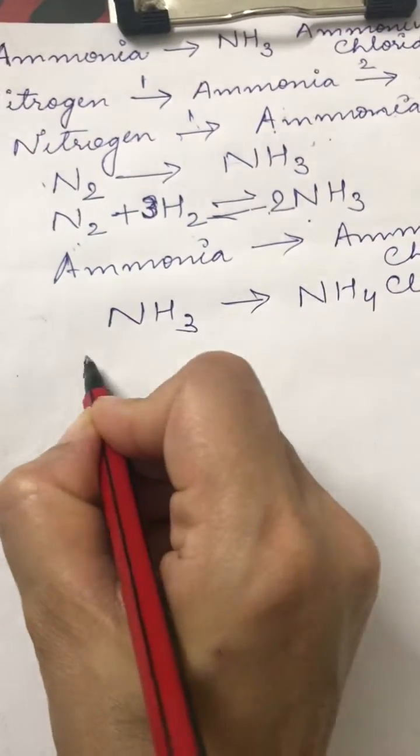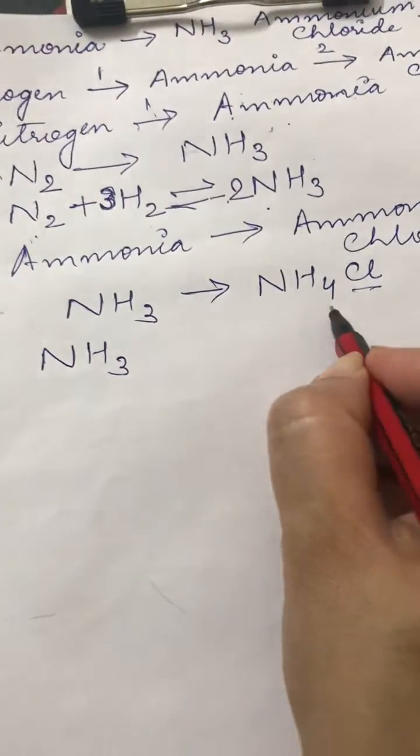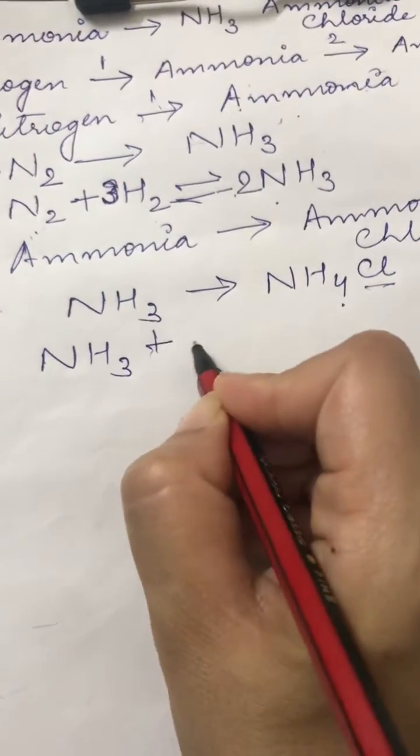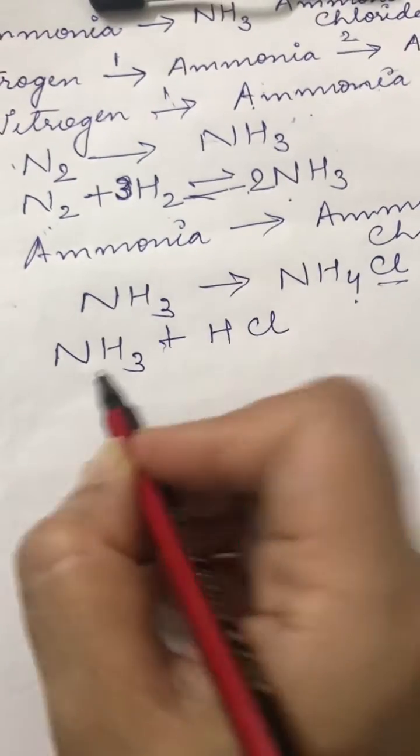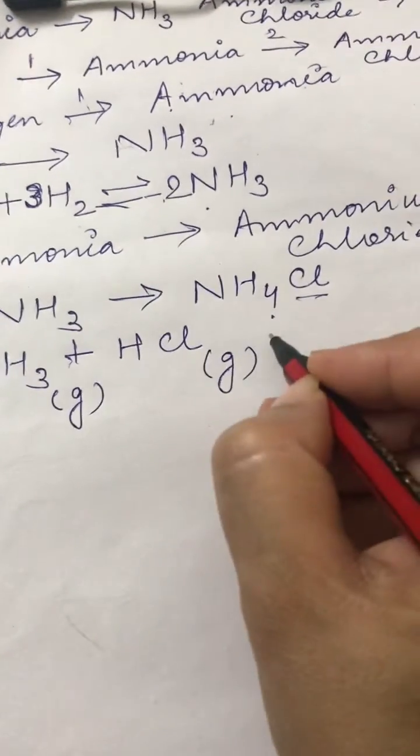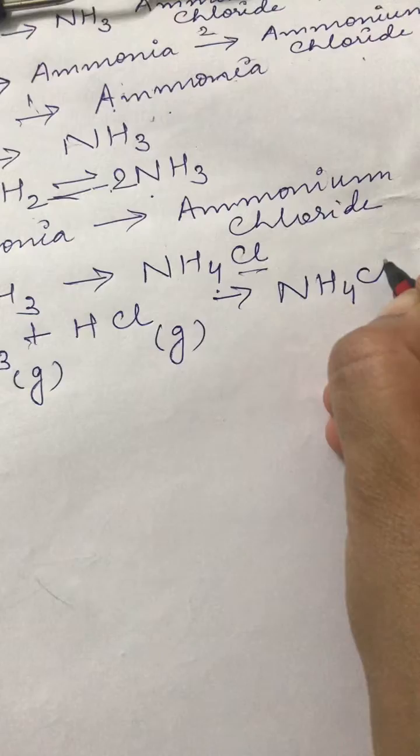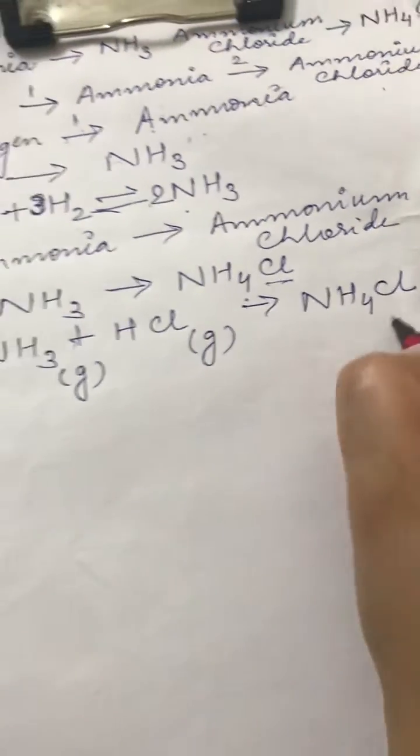Now, how do we do that? We know that ammonia, we need a chloride here and one H more. We have already done this equation. Ammonia, which is a basic gas, combines with HCl, which is an acidic gas. It forms ammonium chloride, NH4Cl, which is a white colored solid.